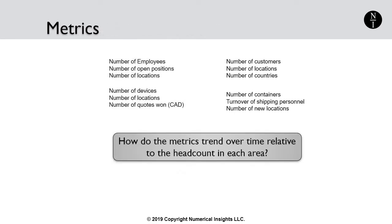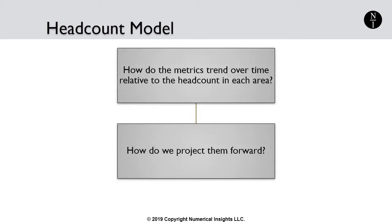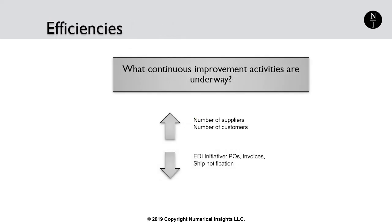The next thing we did was to take our potential list of metrics and look at how those metrics trend over time relative to the headcount patterns in each area — was there or was there not a connection between this historical data and the historical headcount? To build a headcount model, we need to determine how to project these numbers forward, using the relationships between the metrics and historical headcount in order to project headcount forward in our model.